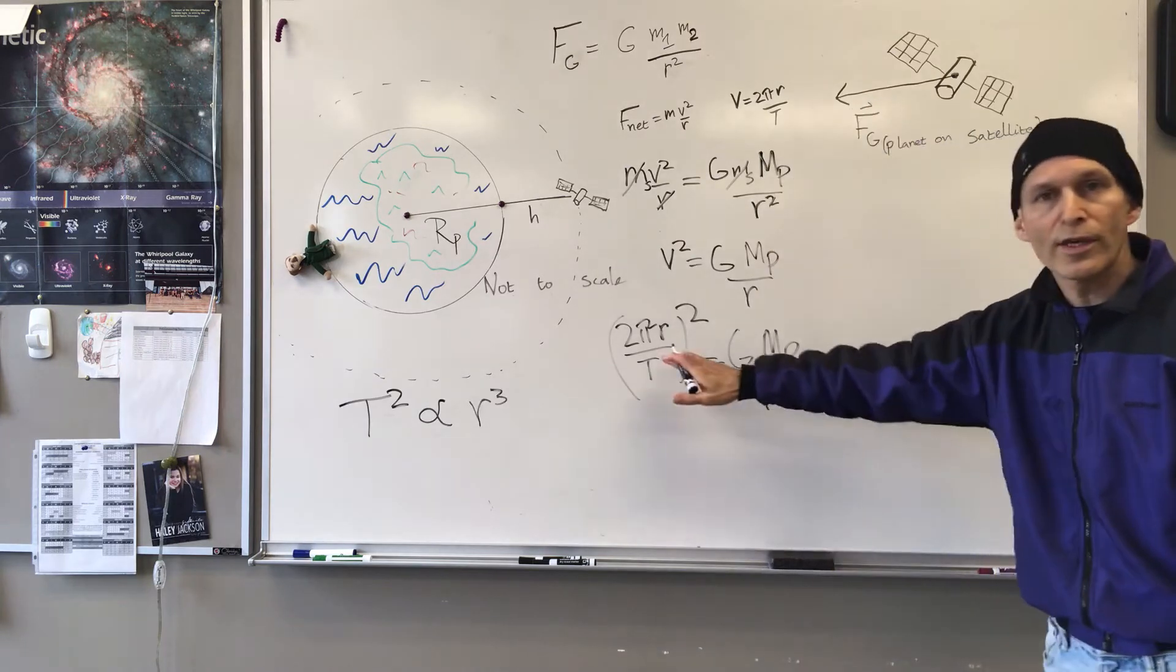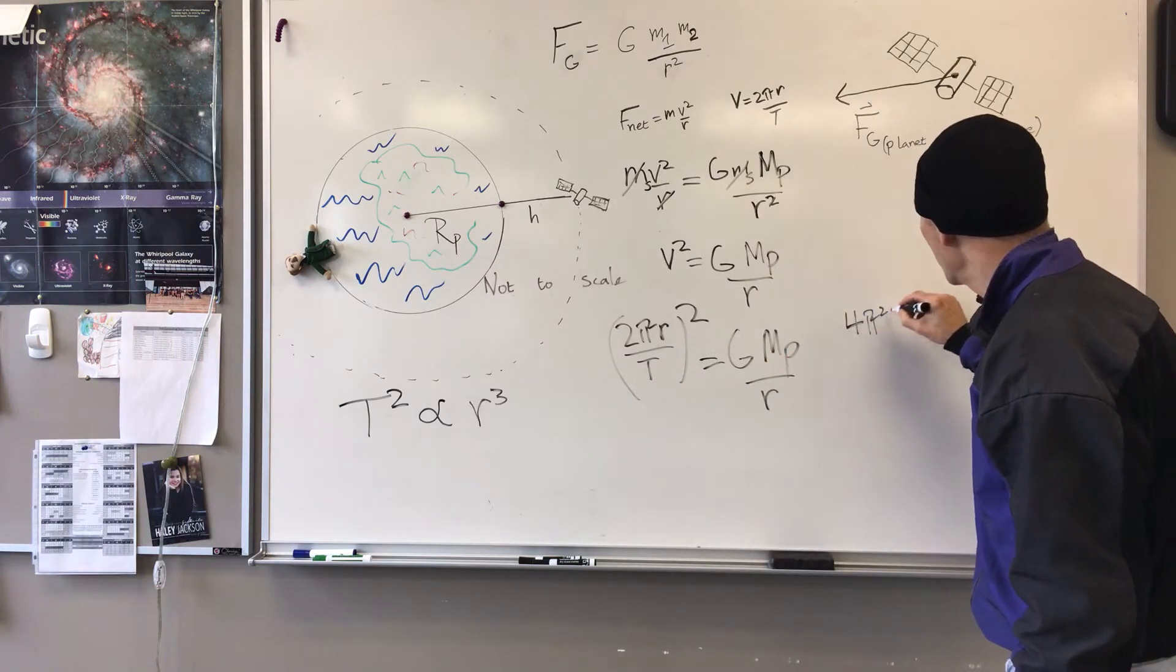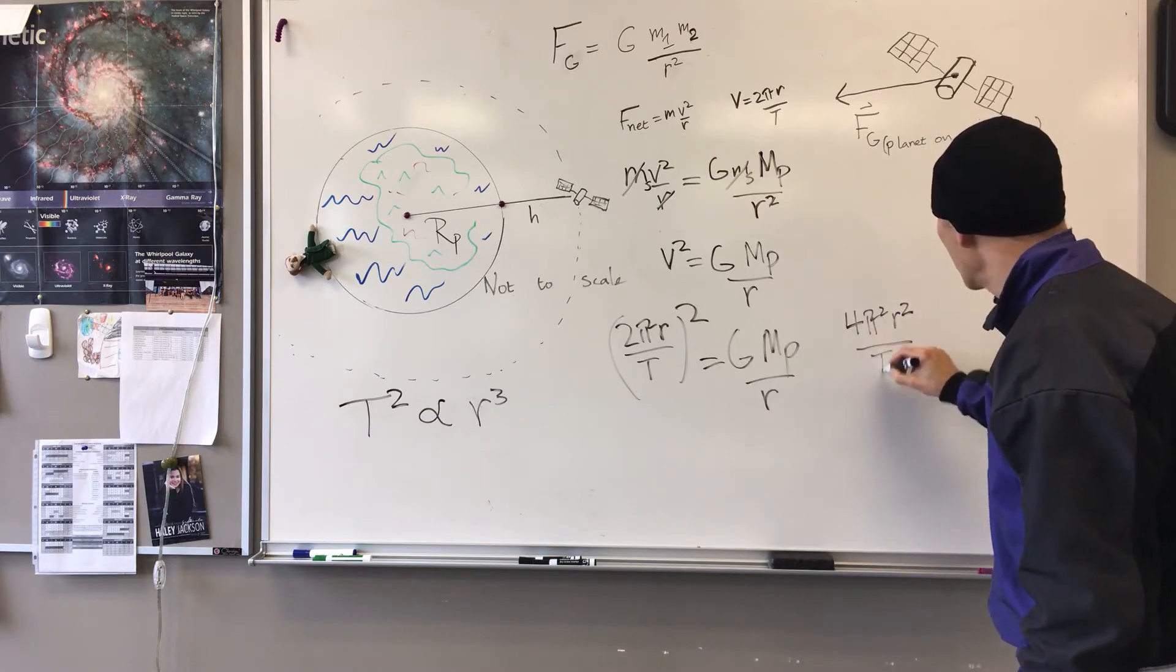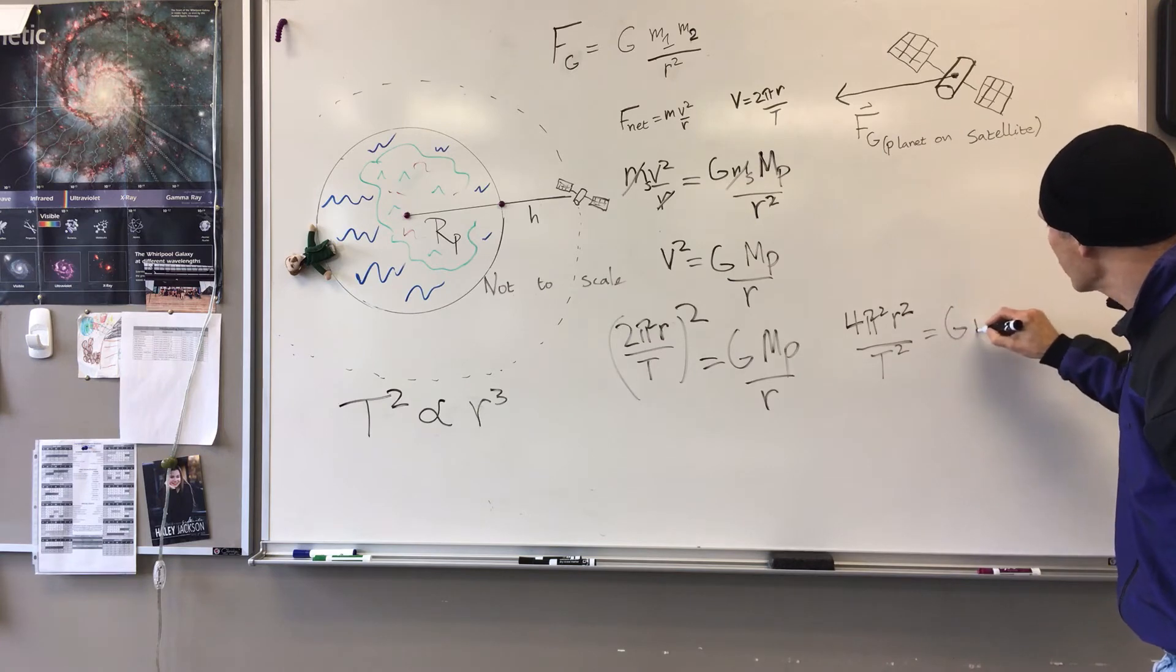Let's go ahead and square everything inside the parentheses. 4π squared R squared over capital T squared equals G, mass of the planet over R.